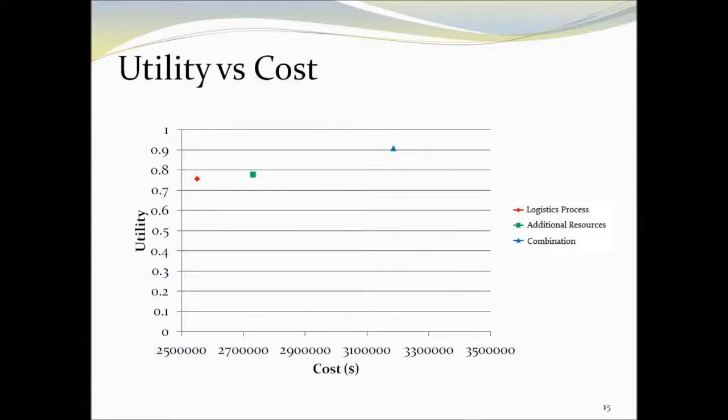Using the value hierarchy and cost estimates provided by NOAA, we were able to plot a utility versus cost chart for each design alternative. Alternatives 1 and 2 have almost the same utility; however, alternative 2 costs more by a couple hundred thousand dollars. Alternative 3 yields the best results but is far too expensive to implement.